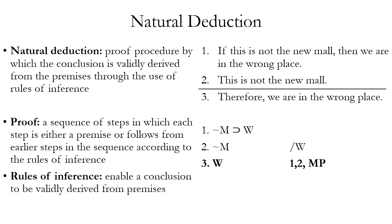Natural deduction has the advantage that it can be more rapid than proof by truth table, even though we don't have that convenient formula we can just follow. A proof by natural deduction is a sequence of steps in which each step is either a premise we're given, or the step follows from earlier steps in the sequence according to rules of inference.